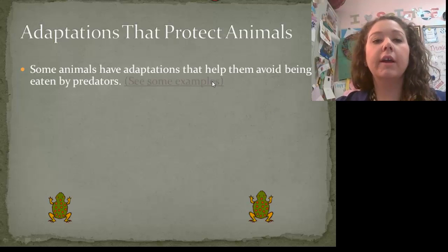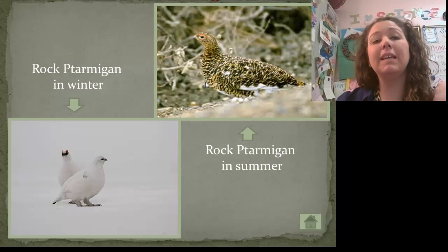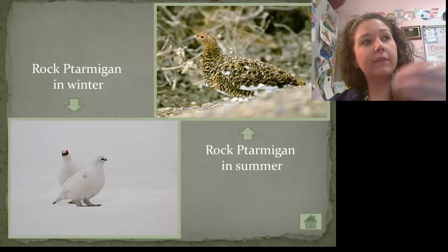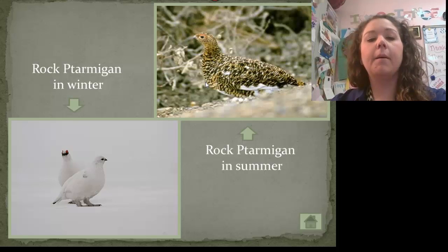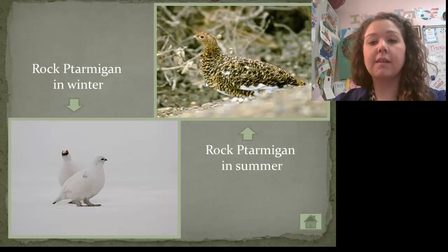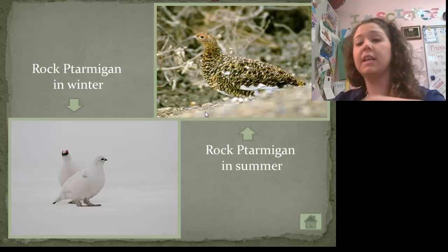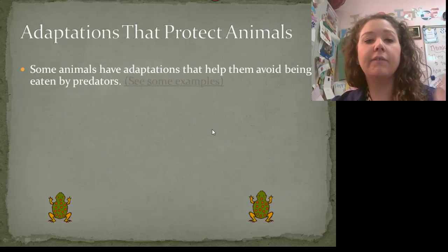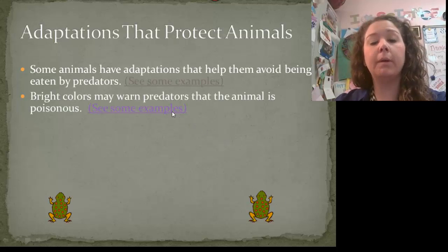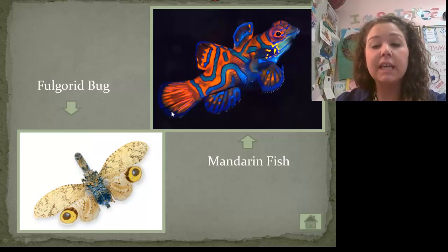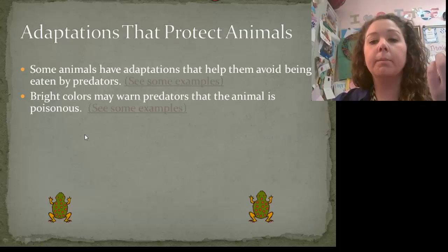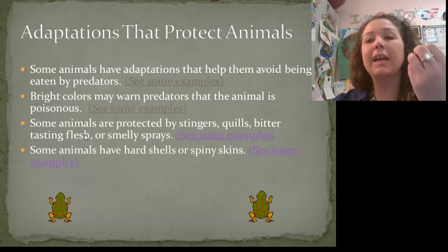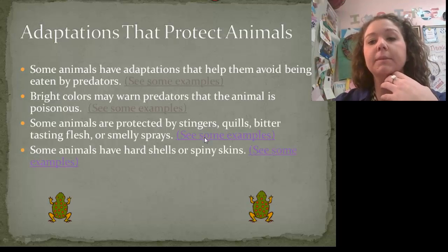A lot of adaptations protect animals and help them avoid being eaten by predators. The predator is doing the hunting; the prey is being hunted. This bird turns white in winter to blend in with the snow, and in summer it blends in with trees, leaves, and stems — that's camouflage. Write down color as another adaptation. Sometimes bright colors warn predators that an animal is poisonous, which is also why color is an adaptation.